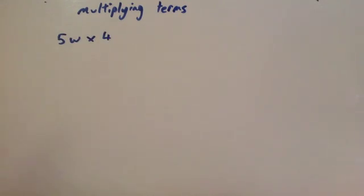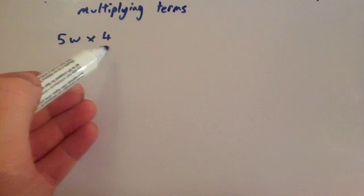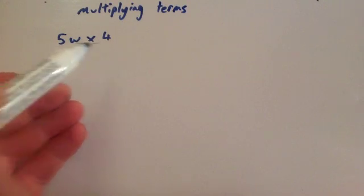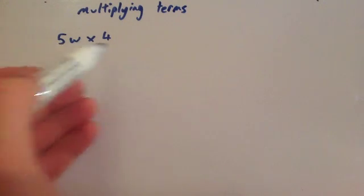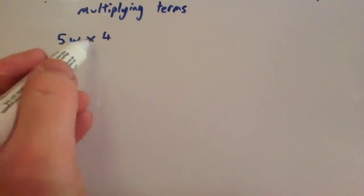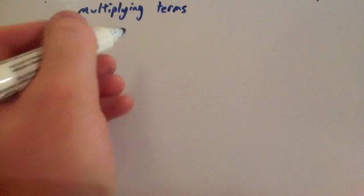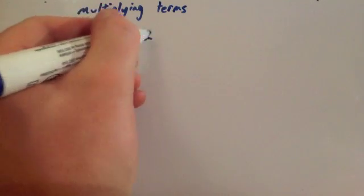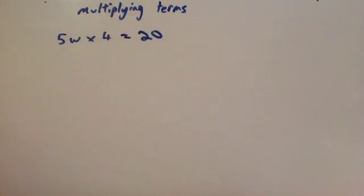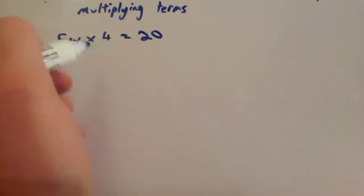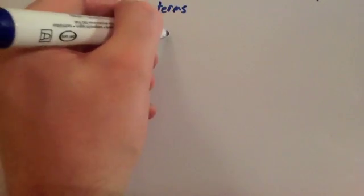Whenever I'm multiplying terms in algebra, what I do is multiply the numbers together, and then multiply the letters together. For instance, if I had 5w times 4, I would times the numbers together first: 5 times 4 is 20. Then you times that by w, and there are no other letters, so it's just 20w.